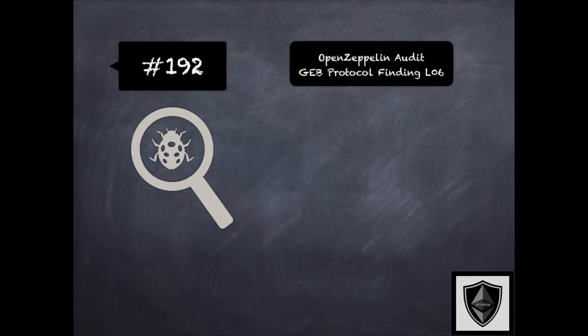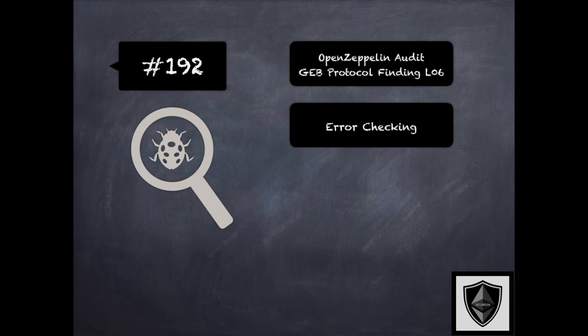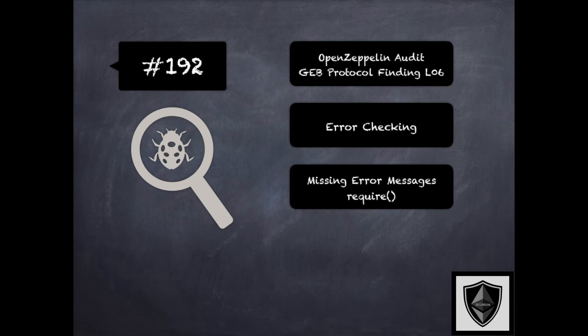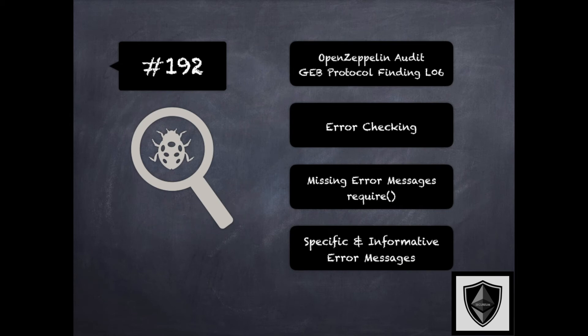Finding 192 is another finding from OpenZeppelin's audit of GB protocol, where the concern was about missing error messages in require statements. There were many places where require statements were correctly followed by their error messages clarifying what the triggered exception was. However, there were also places where require statements were not followed by corresponding error messages, and if any of those were to fail the checked condition, the transaction would revert silently without an informative error message. The recommendation was to consider including specific and informative error messages in all require statements. This is related to error reporting issues in 175, clarity issues in 188, and principle of psychological acceptability in 199 of the security pitfalls and best practices 201 module.